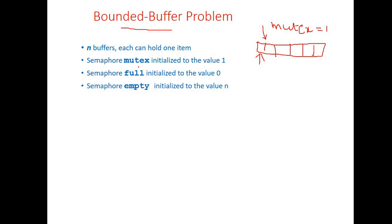The reader and writer use the mutex variable to perform operations in the critical section. In bounded buffer, two more variables are used: full and empty. The full semaphore variable indicates how many buffer elements are occupied. The empty semaphore variable indicates how many buffer elements are empty. Initially, full is 0 because no element is in the buffer, and empty is n because all n locations are free and available for the producer.